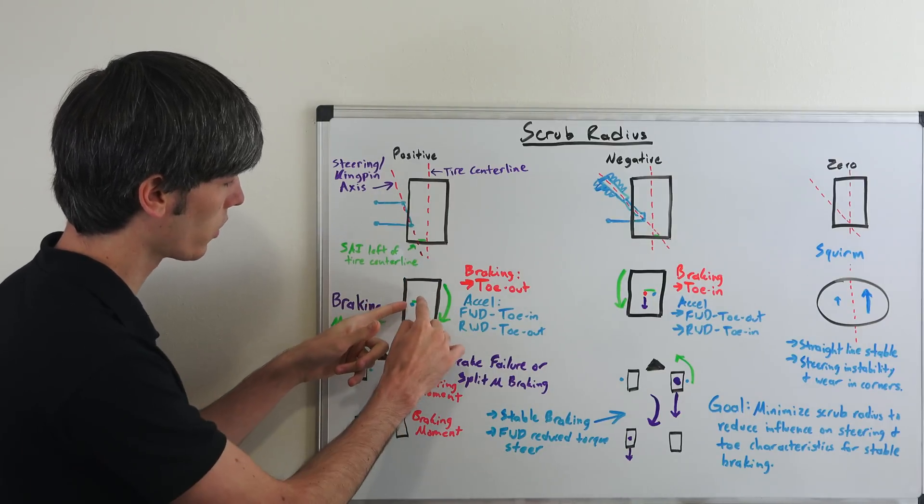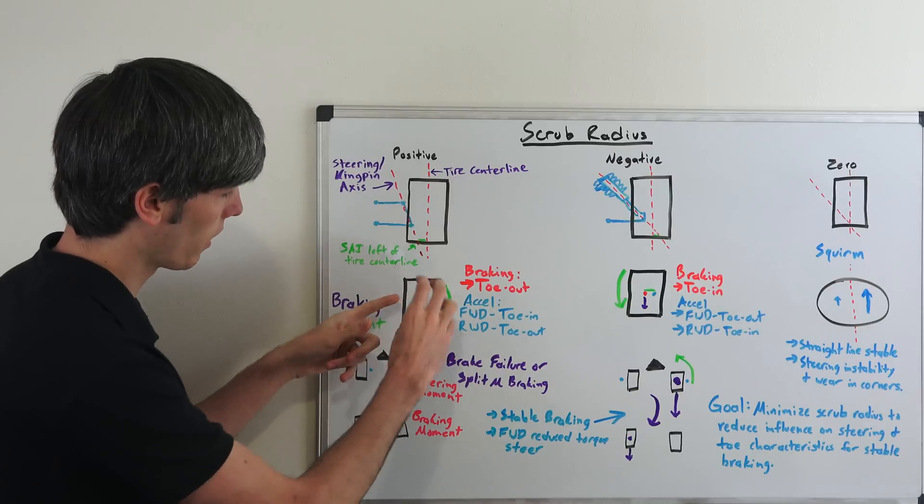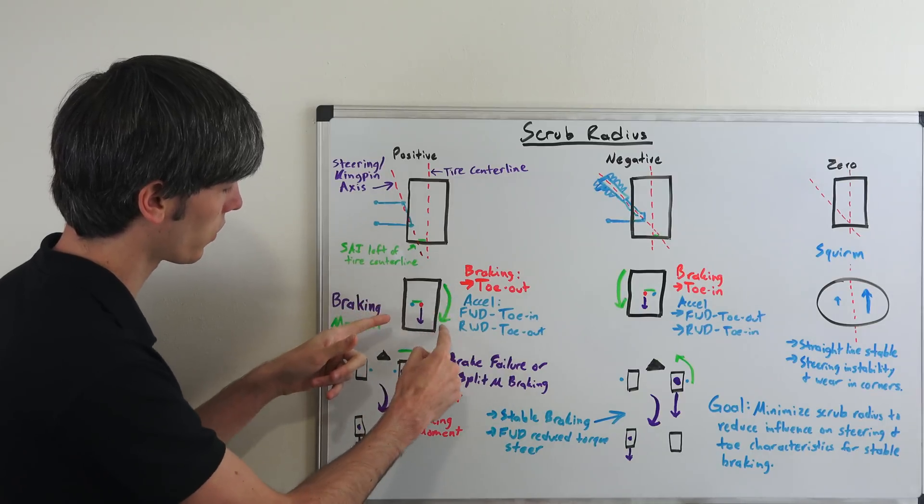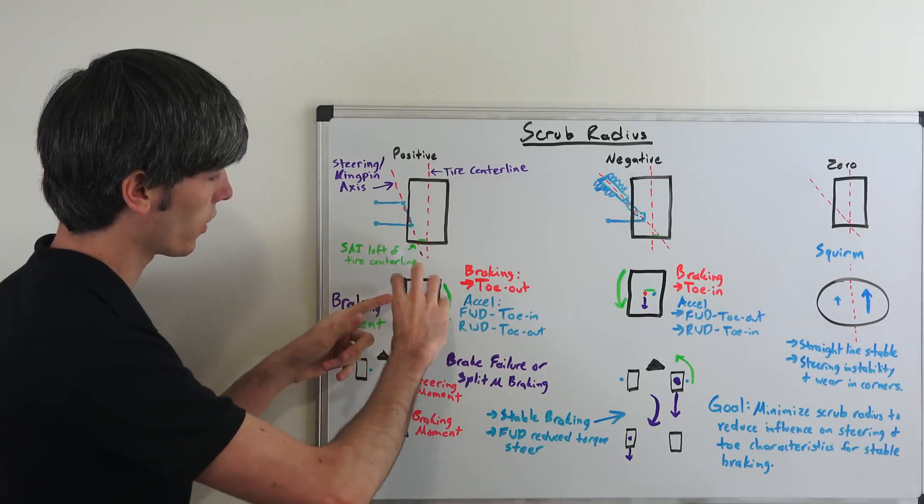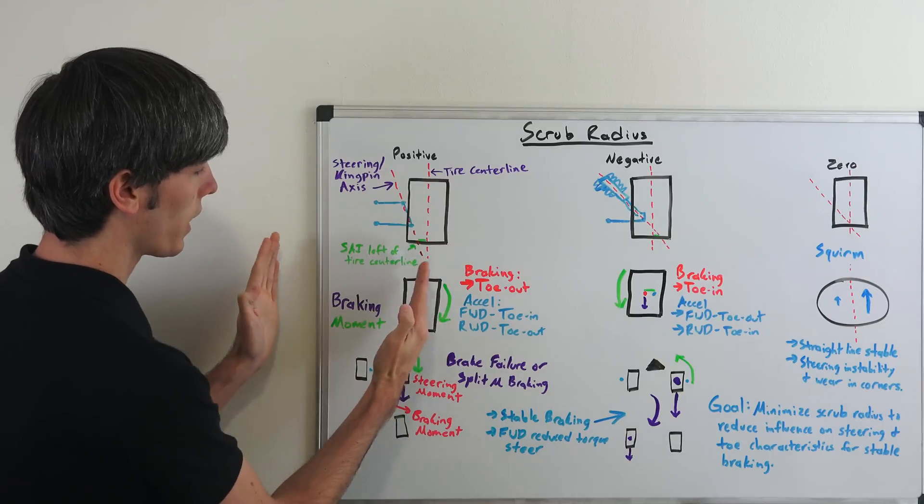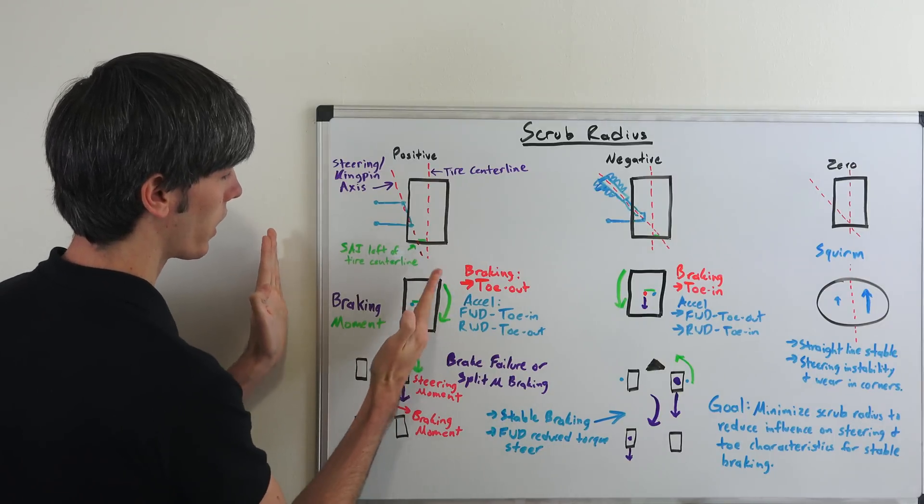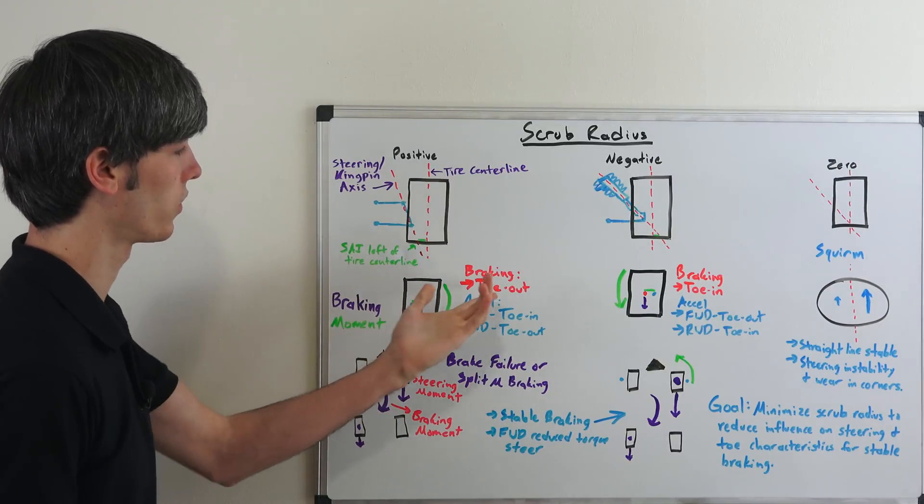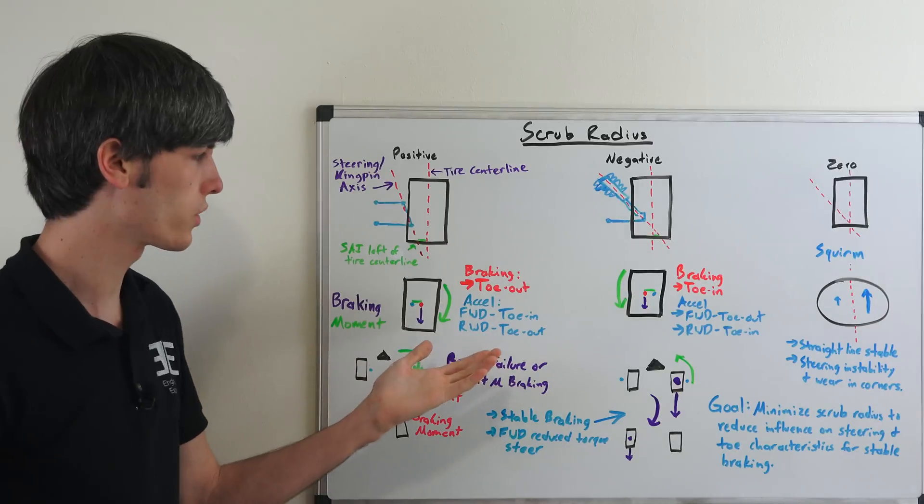And so as you brake you can see that's going to create a moment and want to pull this tire around. So this is our braking moment here in green. The tire is going to want to rotate and so if that's the front tire of your car and you're braking, then as you can see it's going to want to kind of bend out. And so it's going to cause it to tow out under braking.